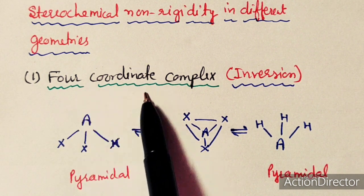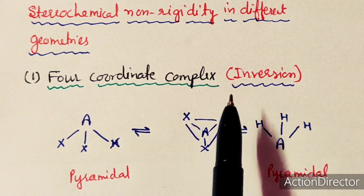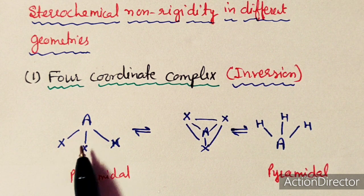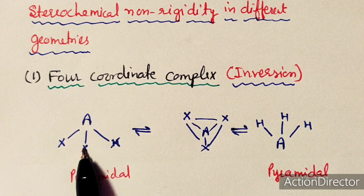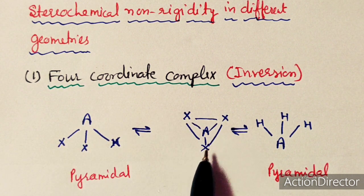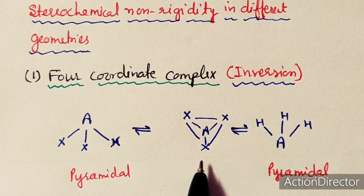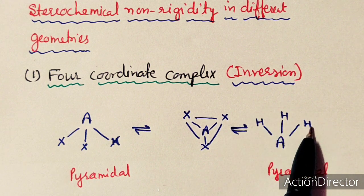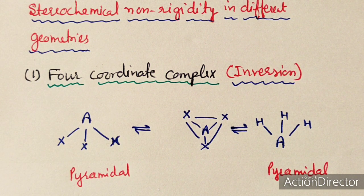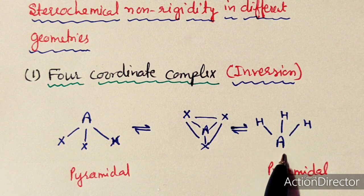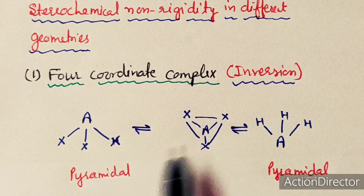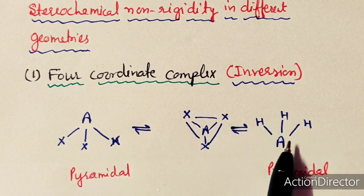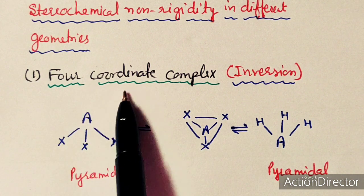We will study different geometries showing stereochemical non-rigidity. For four-coordinate complexes, there is atomic inversion — like ammonia, which has a pyramidal structure that converts to a planar intermediate and back to pyramidal. If all substituents are similar, these two pyramidal structures are in dynamic equilibrium and are actually the same structure. Their energy, structure, and bonding are the same — this is known as atomic inversion, showing flexibility in four-coordinated complexes.